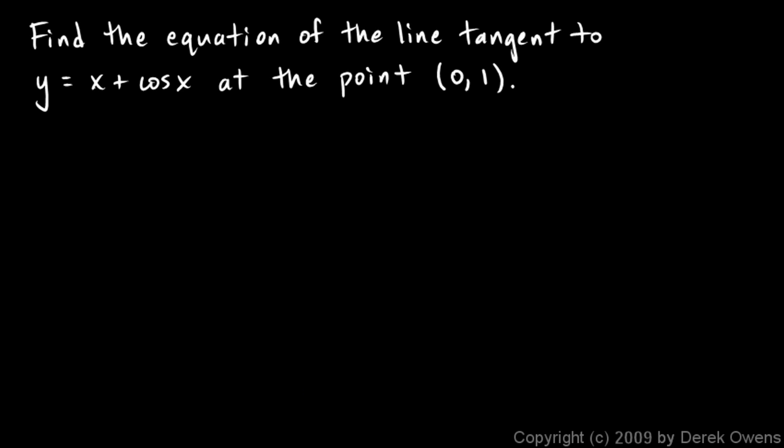Okay. Here we're told to find the equation of the line tangent to this graph. Y equals x plus cosine x at the point 0, 1. If we're going to be finding a tangent line, we'll need the derivative. So let's find y primed. And we can just differentiate here term by term. So the derivative of x is 1. And the derivative of cosine x is negative sine x.